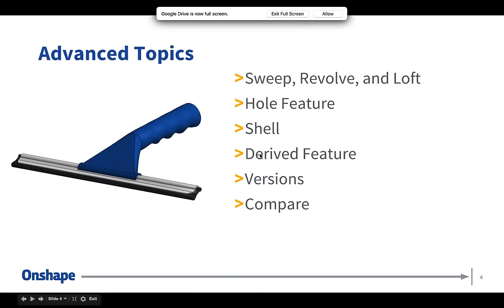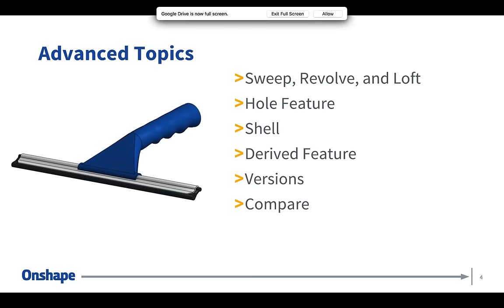Now let's get into the topic of the day: advanced topics. This is outside of the essentials level, so I'm assuming you've done some basic sketching and simple features and are ready to move on to more complex shapes. In the essentials webinar we cover basics of sketching and creating a simple extrude. Today I'd like to get into sweeps, revolves, and lofts. I also want to cover the hole feature, shell, and derived feature. If we have time at the end, I'd like to cover versions and compare — very powerful and easy to use.